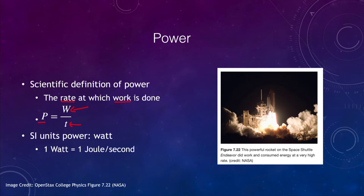If you do that work over a very long time, then the time is large and the amount of power will be small. If you do it over a very short time, then the amount of power can be very large. The unit of power is the watt, where one watt is one joule per second. And we see, for example, an image of the space shuttle here launching up into space.